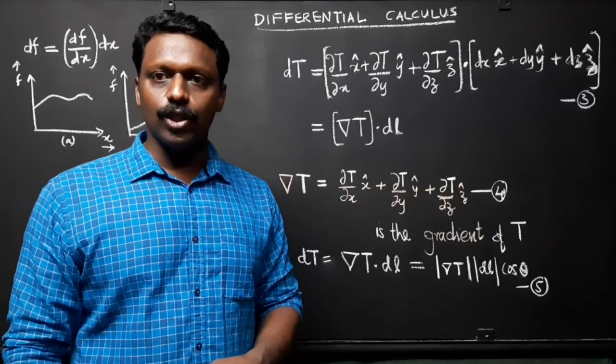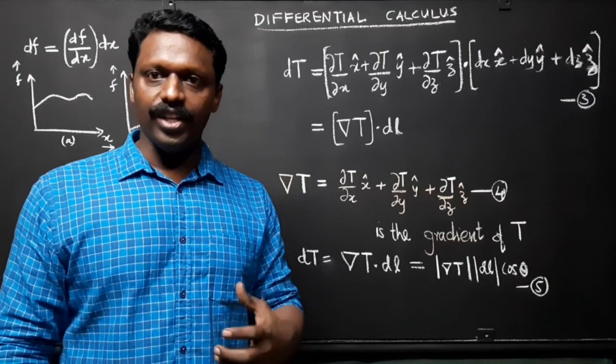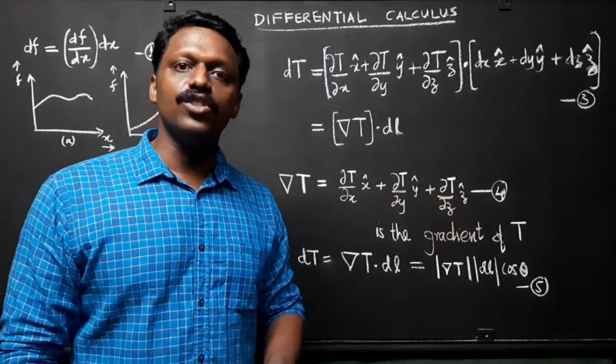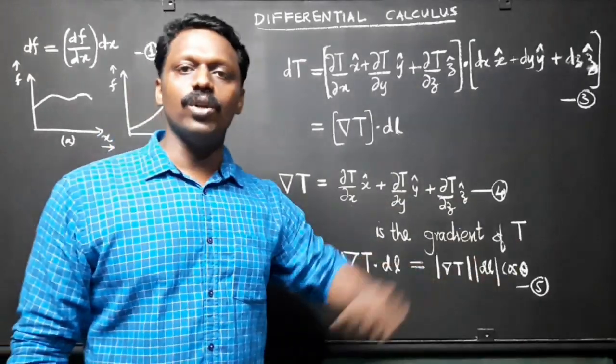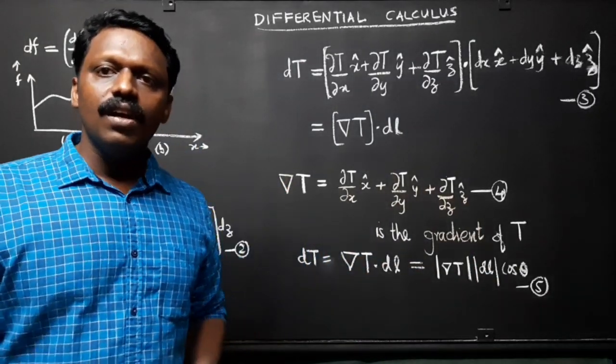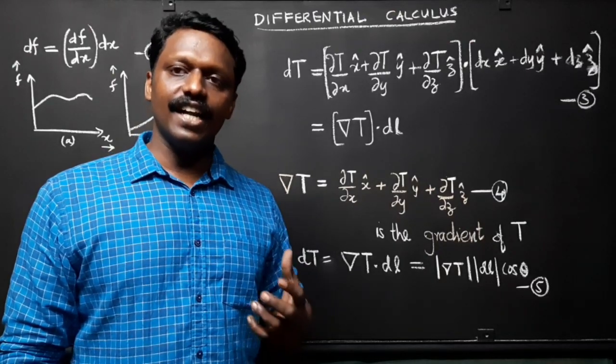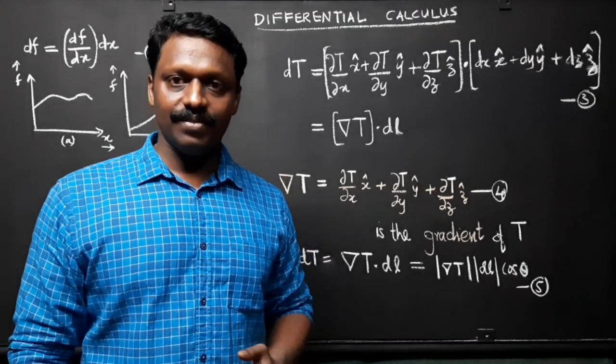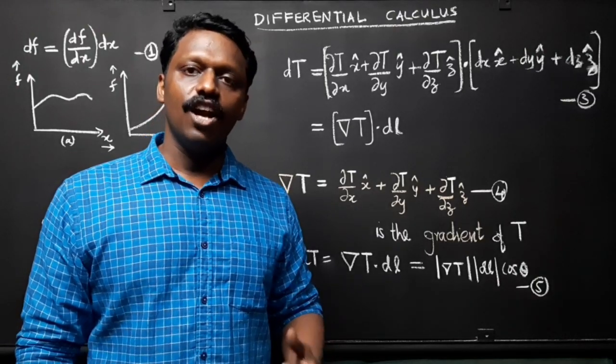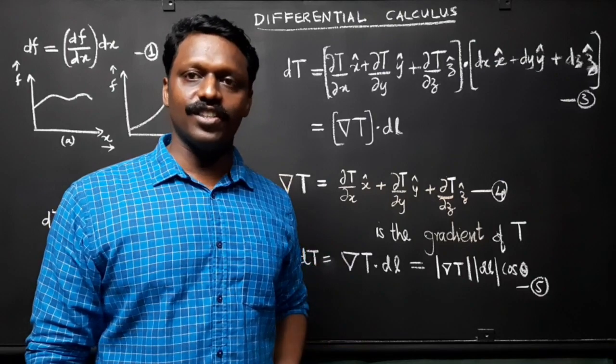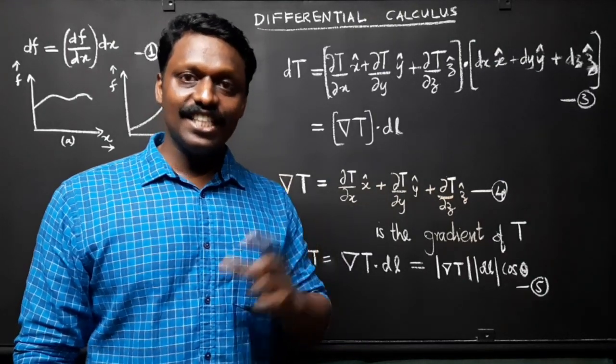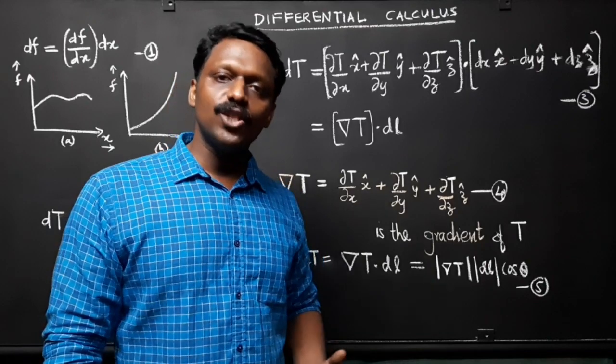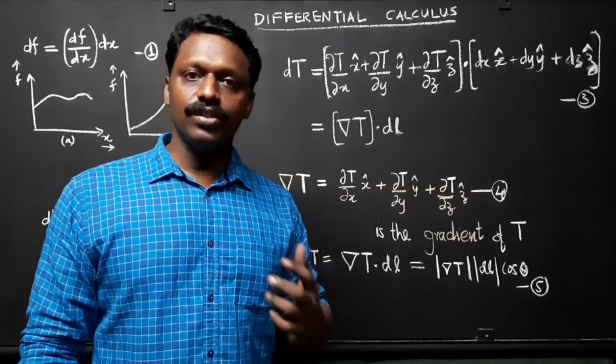Now, if we fix the magnitude and search around in various directions, that is vary θ, the maximum change in T evidently occurs when θ equals 0, that is when cos θ equals 1. That is, for a fixed distance dl, dT is greatest when l moves in the same direction as ∇T. Thus, the gradient ∇T points in the direction of maximum increase of the function T. Moreover, the magnitude |∇T| gives the slope along this maximal direction.